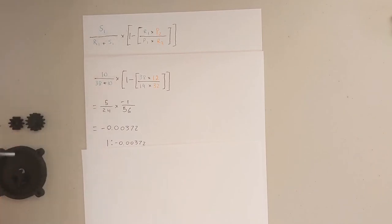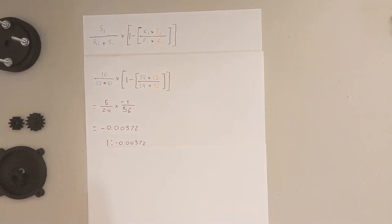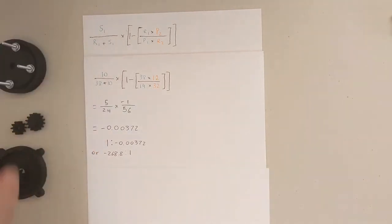But that doesn't really help us a lot since it's such a small number. This also means that for every 268.6 turns on the input we get one rotation on the output. Now this isn't the only equation you need to know for designing a planetary gearbox - there's a bunch of other equations you do also need to know, but this equation is important when designing a compound planetary gearbox.